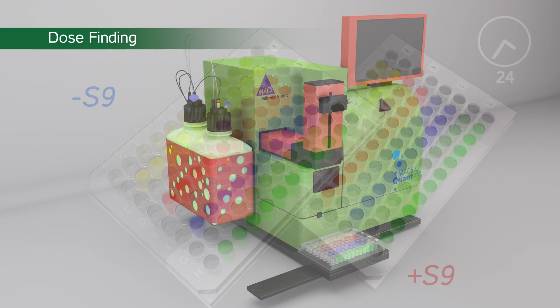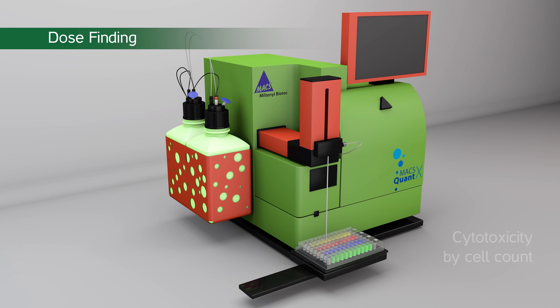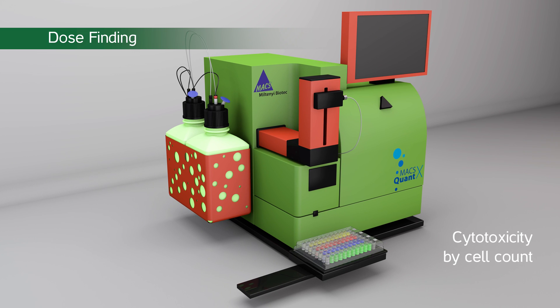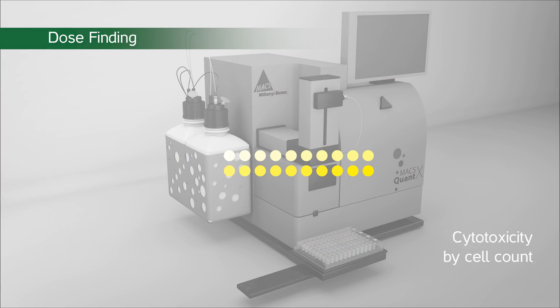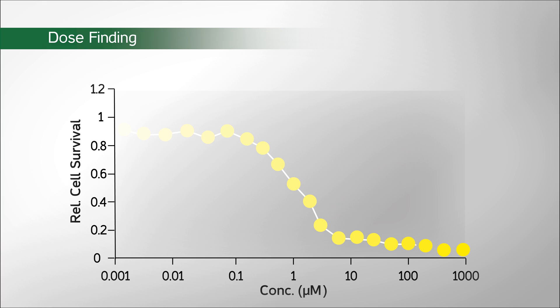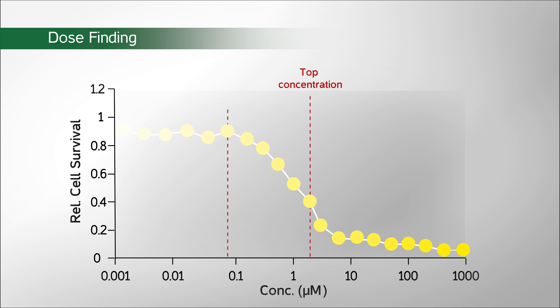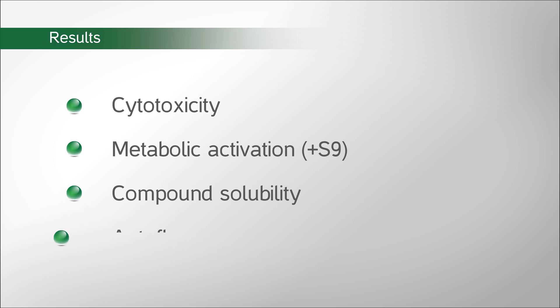After a 24-hour exposure, cell viability is determined using relative cell count in treated and untreated cultures. The dose that induces 50-60% cytotoxicity is selected as top concentration for Toxtracker or Toxtracker ACE. The lowest test concentration is generally not cytotoxic. This initial experiment also provides information on solubility and autofluorescence of the compound.